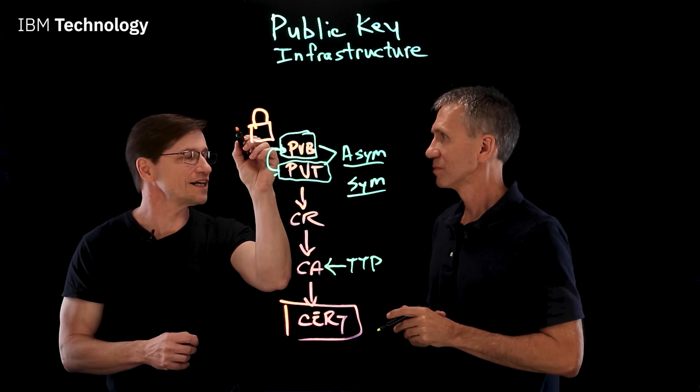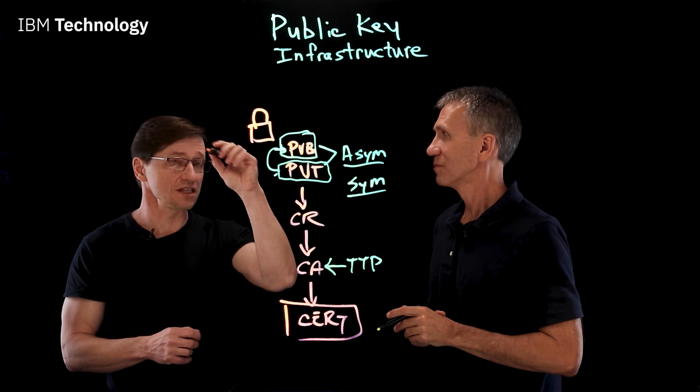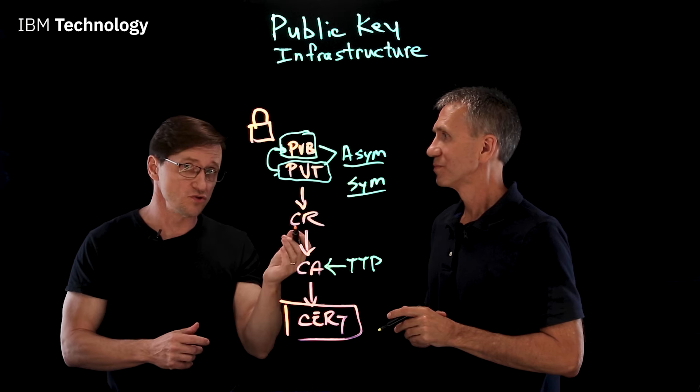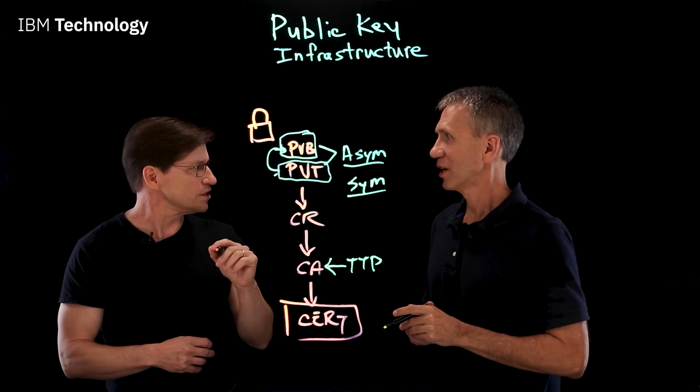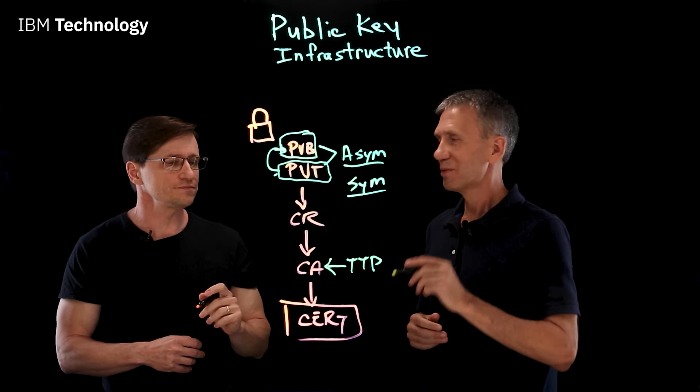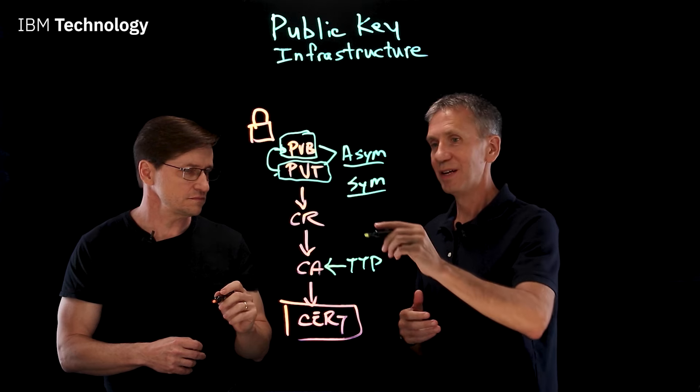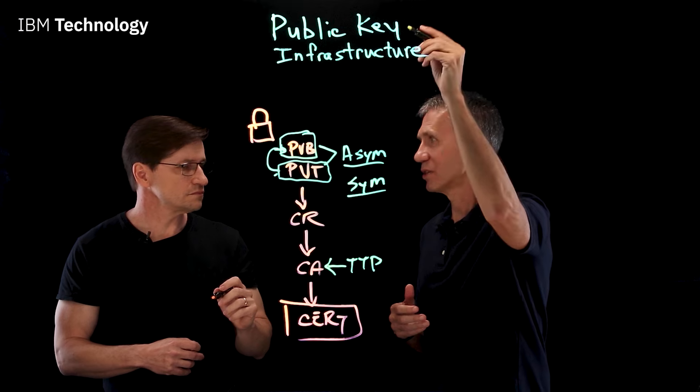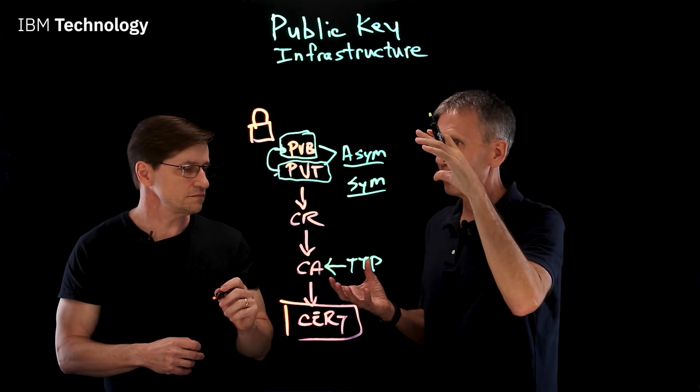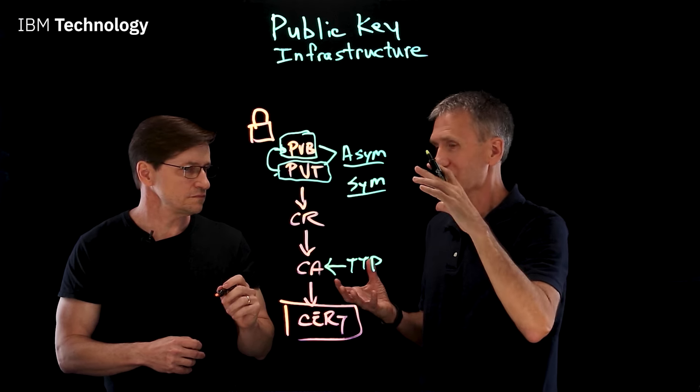When you click that lock icon, it actually shows you a list of all the authorities that were used to authenticate that and shows a trust, a chain of trust. Exactly. Right. Okay. Because you may have multiple certificate authorities. This certificate authority is trusted by another, is trusted by another and so forth.